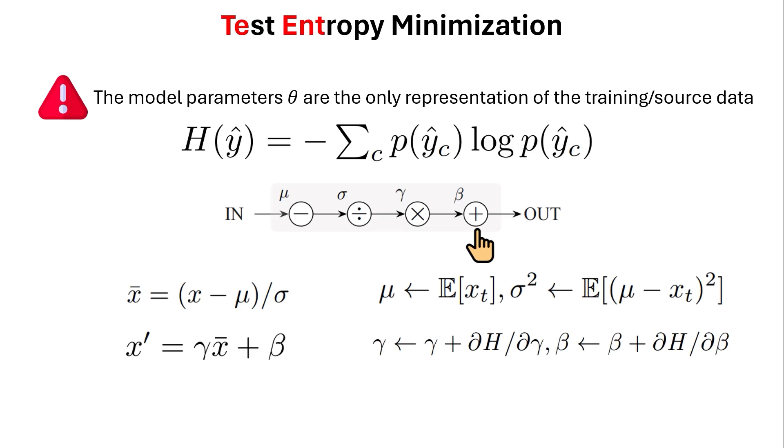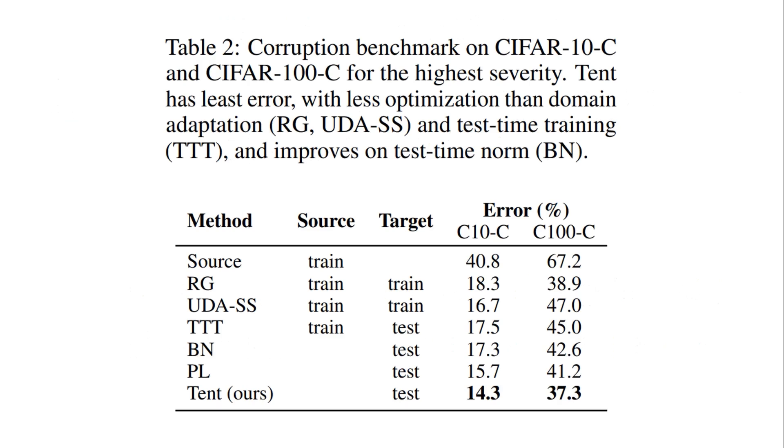Does it work? Well, yeah, otherwise, it wouldn't be a paper. And you can see one of the results in this table that they have applied it on CIFAR-10 and CIFAR-100. They make it corrupted. And you see that on the source one, on the first row, the error rate becomes 40.8% on the CIFAR-10 and 67.2% on CIFAR-100 dataset. But by applying this TENT just to minimize the entropy, it becomes 14% and 37% and beats all the other models that was previously proposed.